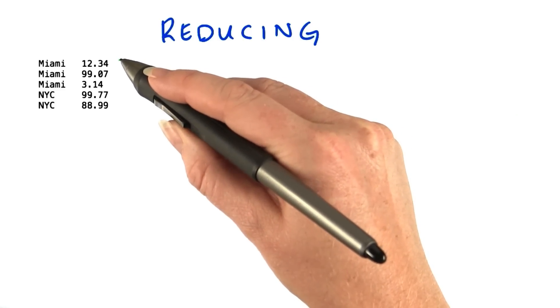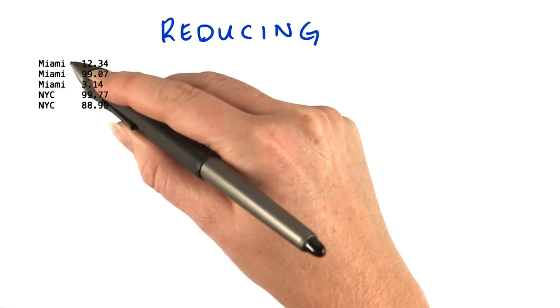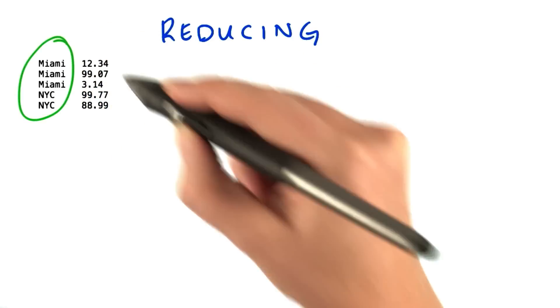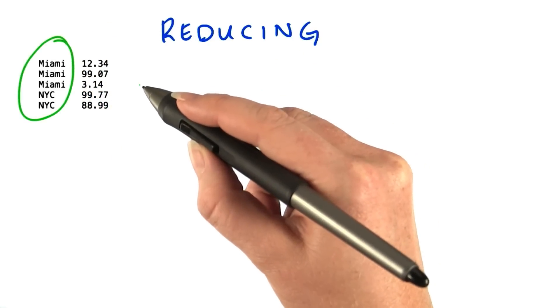As you can see, the data comes in streamed as lines of text. Each line contains a store name and the cost. The store names are sorted, which we're guaranteed because of the shuffle and sort.